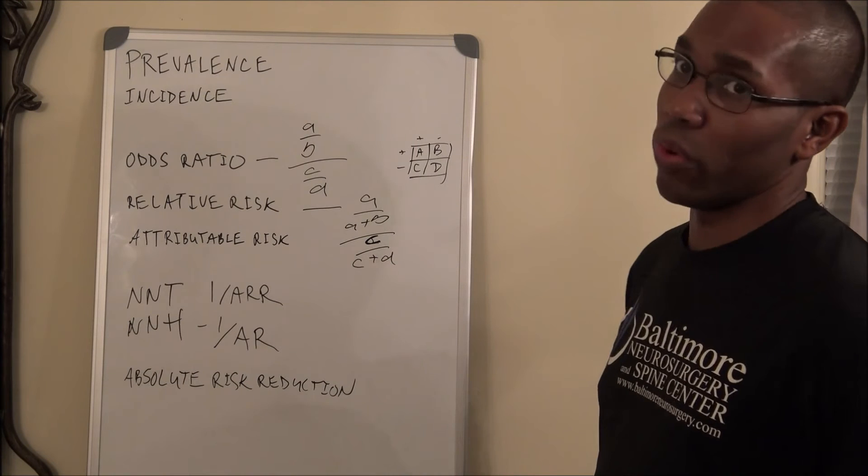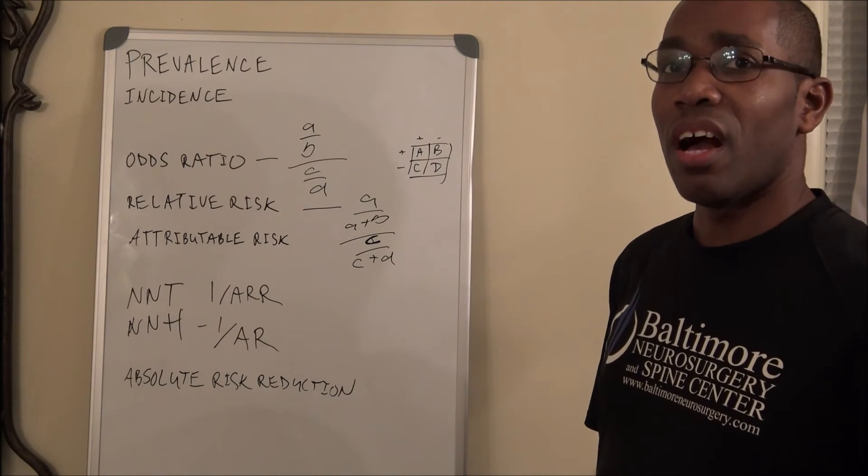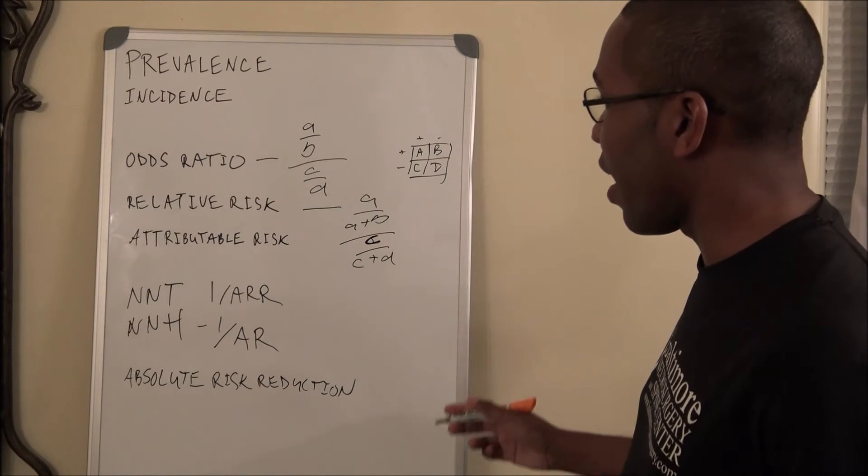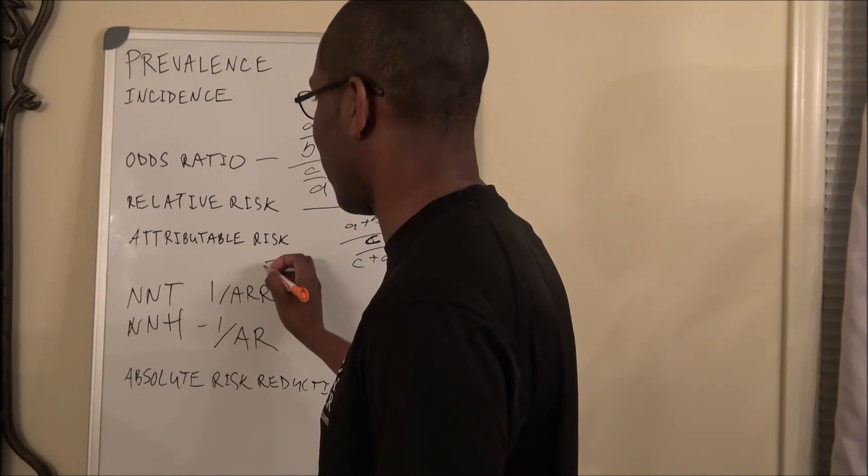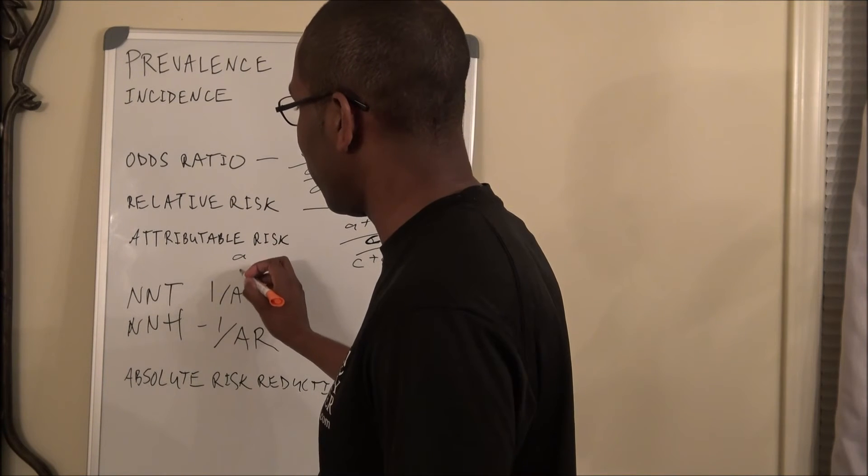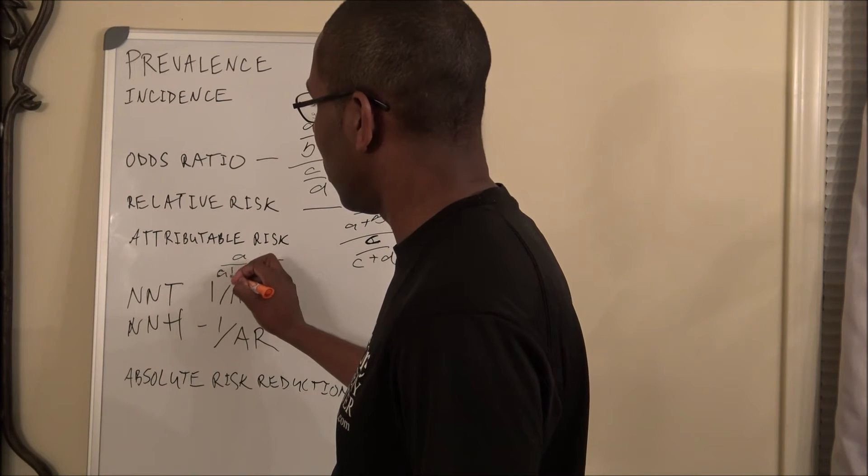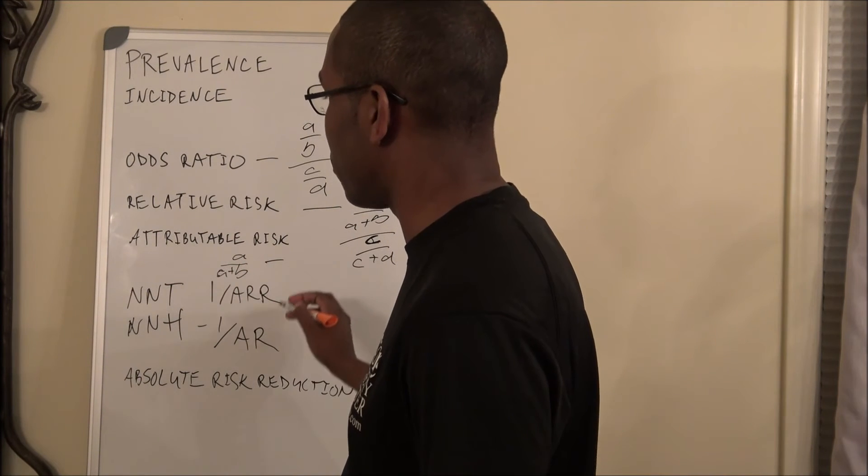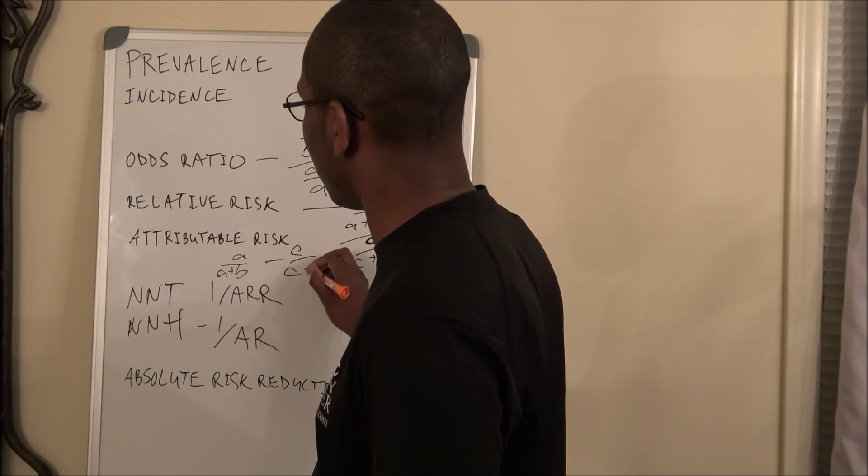Now, for attributable risk, that's actually a little more complicated. Attributable risk, you're going to have, and this is actually going to be minus. You're going to have A over A plus B minus C over C plus D.